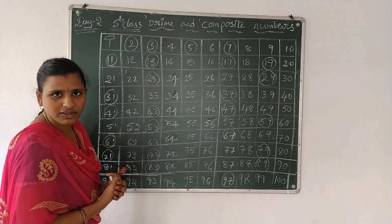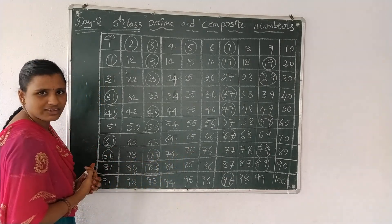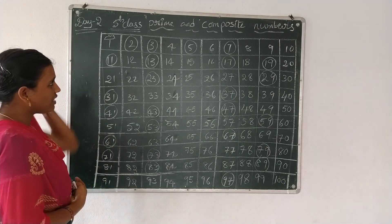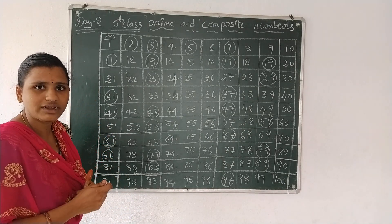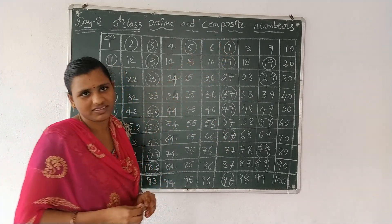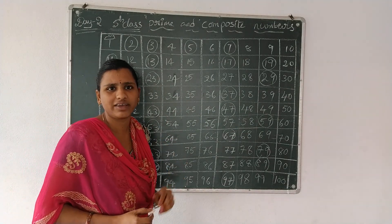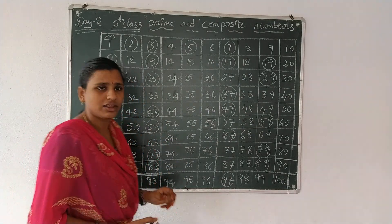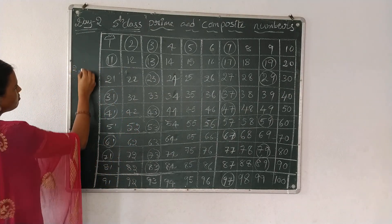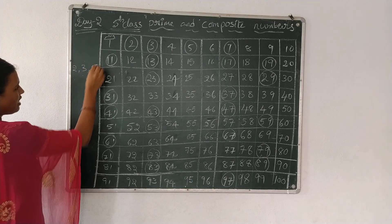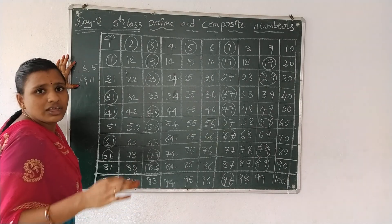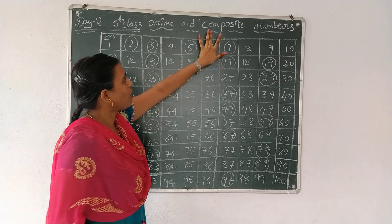First, see this box. Draw in your books a box with 1 to 100 numbers. We will use 5 tables mainly. Those are 2, 3, 5, 7, and 11. Using these 5 tables, we will easily find out the composite numbers.